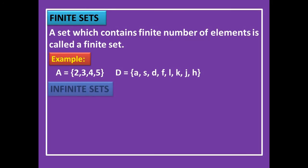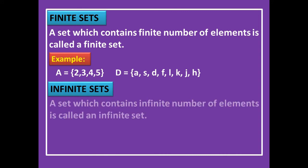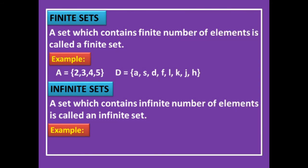A set which contains an infinite number of elements is called an infinite set — that means uncountable elements. For example, the set of natural numbers N = {1, 2, 3, 4, ...} — you don't know how many elements are there. Also, P = {2, 3, 5, 7, ...} — these are all prime numbers, and there are infinitely many of them. Both are examples of infinite sets.